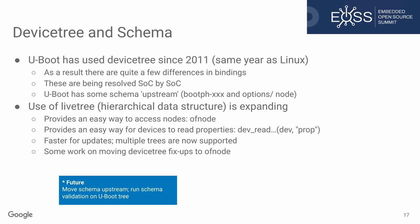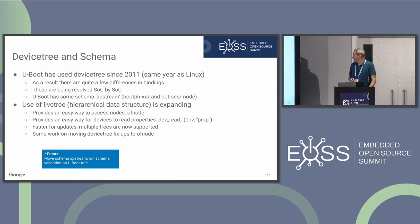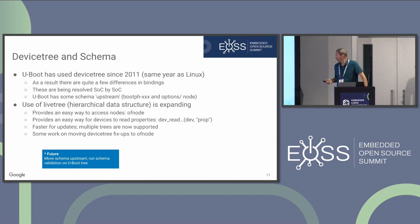U-Boot adopted device tree roughly the same time as Linux, but the bindings don't always match — they use different properties and nodes — and that's being resolved over time. U-Boot also wasn't able to upstream its schema requirements until recently, but there's now a DT Schema process and willingness to accept those patches. The idea is to get the upstream device tree from Linux and use it in U-Boot, as long as you've got the relevant drivers. There's also a LiveTree — a hierarchical data structure — seeing more usage as well.